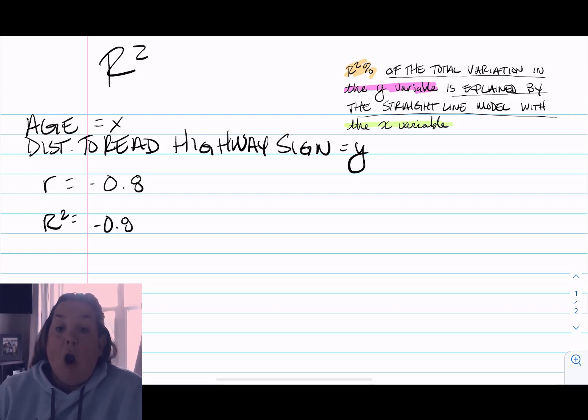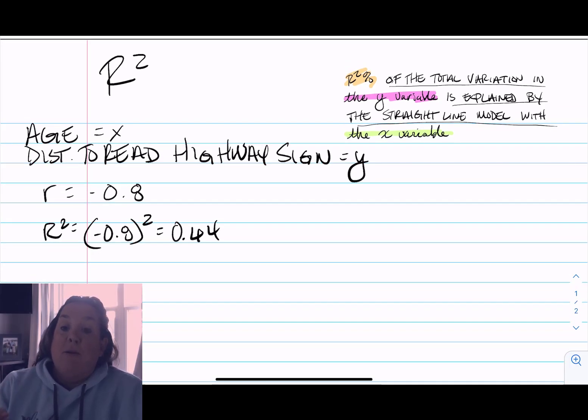We have an r of negative 0.8, but because R² is squaring r, R² is going to be 0.64. We make that into a percentage by multiplying by 100, so 64%.